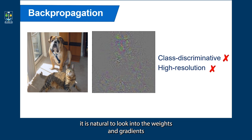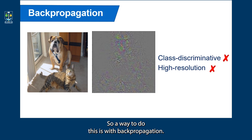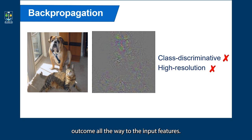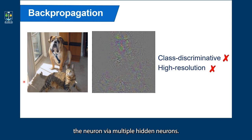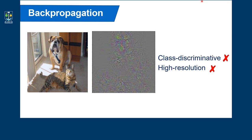In order to visualize a deep neural network, it is natural to look into the weights and gradients of a particular neuron. A way to do this is with backpropagation: we do a forward pass and then compute the gradient of a particular neuron using backpropagation from a particular outcome all the way to the input features. However, every pixel influences the neuron via multiple hidden neurons, so the result we get is neither class discriminative nor high resolution.